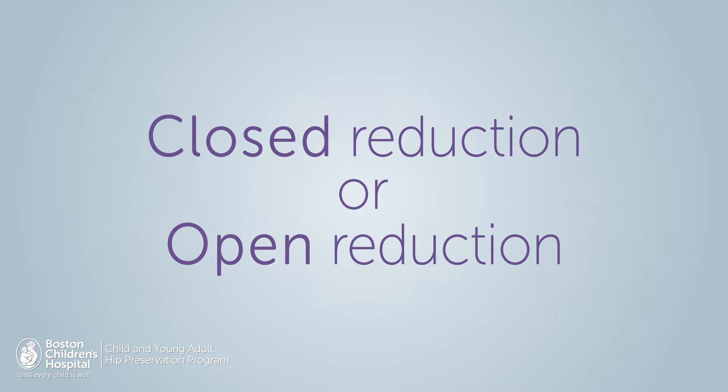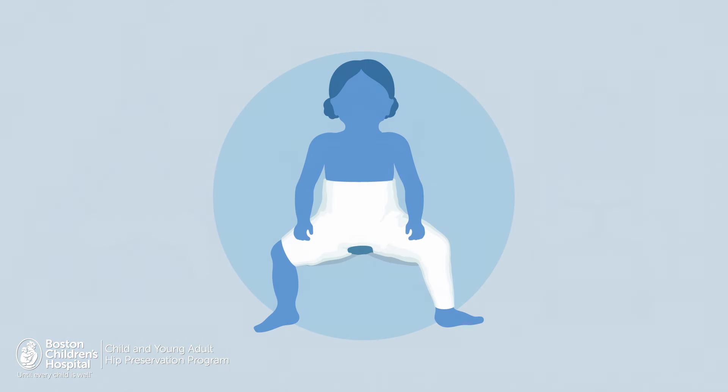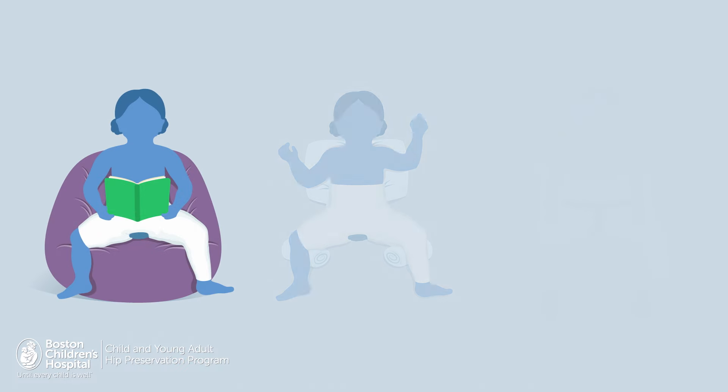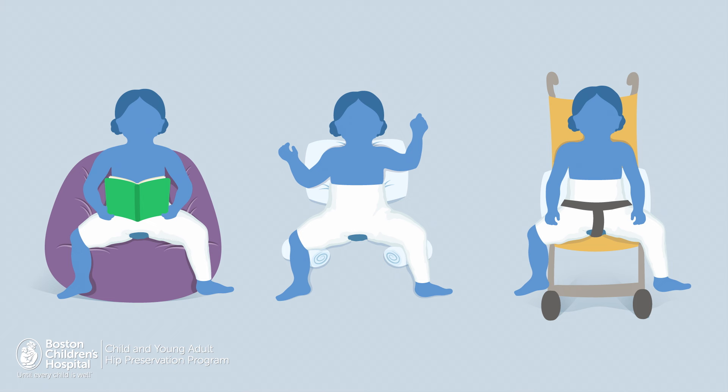With both closed and open reductions, your child will need to be in a type of body cast called a spica cast for a few months in order to keep the hip in place as it heals. Children often adjust quickly to daily activities while wearing the cast, and we will give you tips to help you and your child through this period.